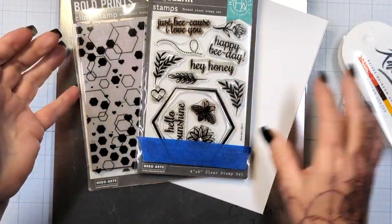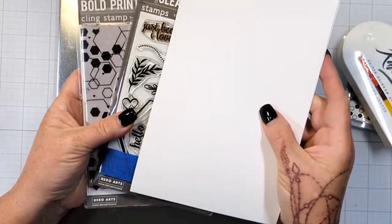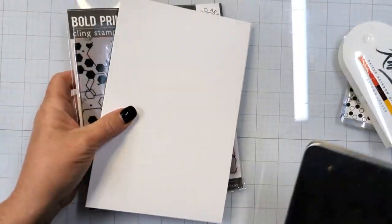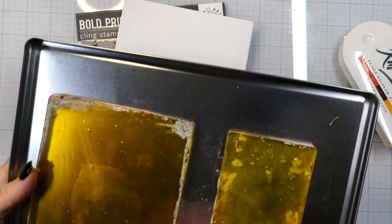Today I'm going to be playing with this beautiful Kaleidocolor ink pad. We'll talk a little bit more about what makes Kaleidocolor special, but I'm also going to be using my gel plate as well as some different embossing powders.